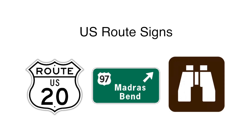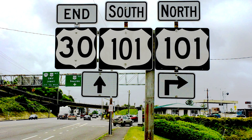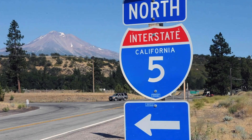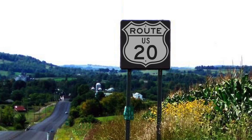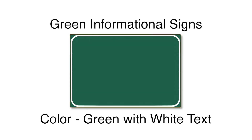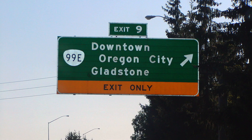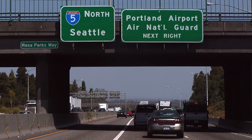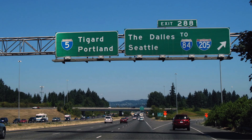Route, guide, and information signs: Route signs show you which route you are on and whether the road is an interstate, U.S. route, or state highway. Guide or information signs are green and give exit information or show the direction of roads or cities. The number on an exit sign helps you know which exit to take.